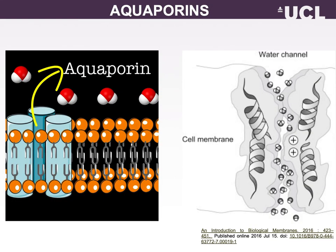Aquaporins, also known as water channels, are considered to be a plumbing system for cells. For decades it was assumed that water simply leaked through biological membranes by numerous processes. However, these methods of water permeability could not explain the rapid movement of water across some cells. Aquaporins are usually specific for water permeability and exclude the passage of other solutes. A type of aquaporin known as aquaglyceroporins can also conduct some very small uncharged solutes such as glycerol, carbon dioxide, ammonia, and urea. However, all aquaporins are impermeable to charged solutes. Water molecules traverse the aquaporin channel in a single file.